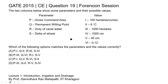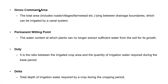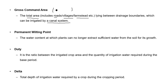Let's recall all the parameters. The gross command area is the total area which can be irrigated by a canal system. This area includes roads, villages, farmstreets, etc. Since this is an area, the unit is square meters or square kilometers, but generally we define gross command area in hectares.